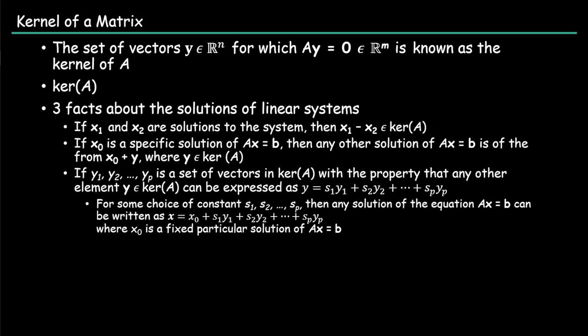Lastly, if Y1, Y2, all the way to YP is a set of vectors in the kernel of A, with the properties that any other element Y is in the kernel of A, can be expressed as Y equals S1Y1 plus S2Y2, all the way to SPYP.